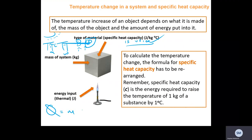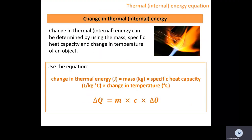The formula for specific heat capacity is Q = mcΔθ, where Q is the energy input, m is the mass, c is the specific heat capacity, and Δθ is the change in temperature. Specific heat capacity is the energy needed to raise one kilogram of a substance by one degree Celsius. The change in thermal energy can be determined using mass, specific heat capacity, and change in temperature.